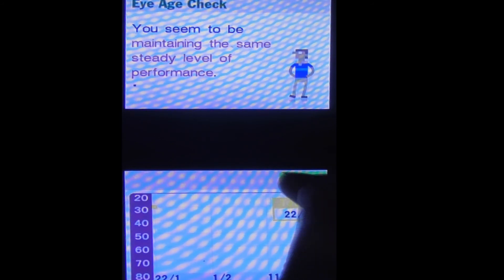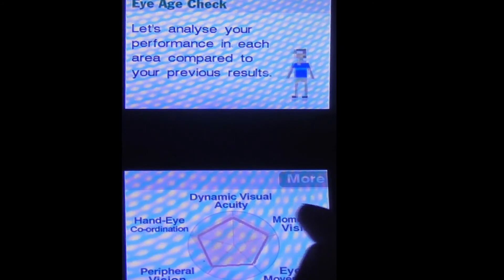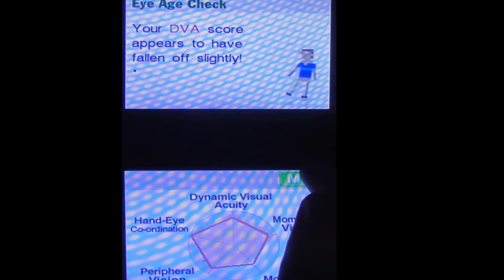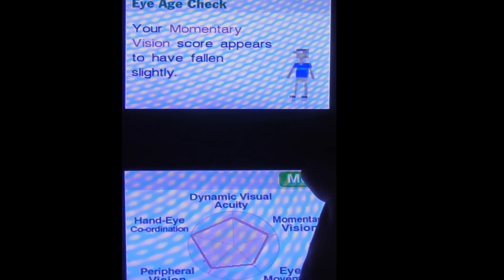But there are some skills that I just don't trust my own eyes. And it's not going to be completely accurate because of my positioning. I'm not quite above it. So it's slightly off. Eye movement was the one I didn't do so well at though. DVA score appears to have fallen off slightly. Dynamic visual accuracy. That's what DVA is. Hand eye coordination. I've always done well at that.